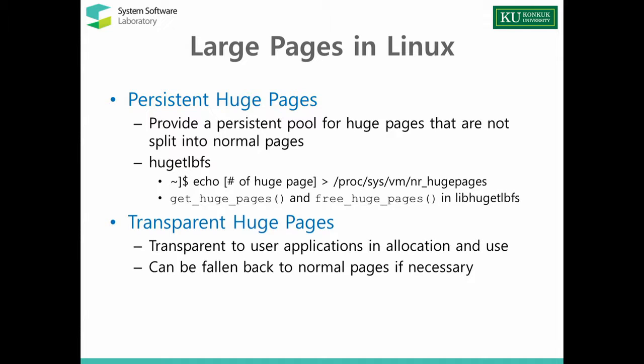Linux provides two ways of using huge pages. One is persistent huge pages, which provide a persistent pool for huge pages that are not split into normal pages — also called HugeTLBFS — which you can generate using a specific command and allocate/deallocate through library functions. The other way is transparent huge pages, which are transparent to user applications in allocation and use, but can fall back to normal pages if necessary. This can happen silently, so we don't know when transparent huge pages are split into normal pages.